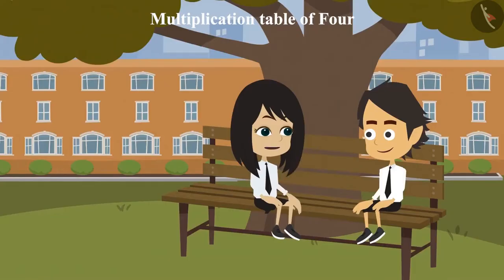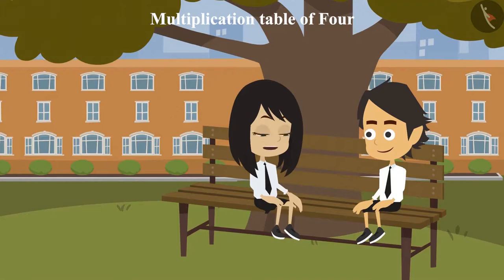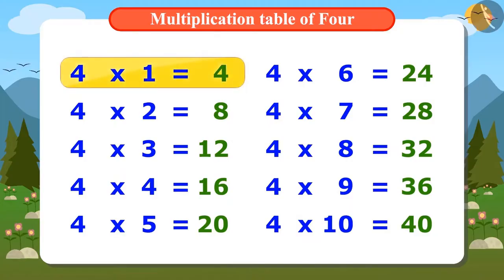Yes, now let's memorize this multiplication table of 4 in the sing-song manner. 4 ones are 4, 4 twos are 8, 4 threes are 12, 4 fours are 16, 4 fives are 20, 4 sixes are 24, 4 sevens are 28, 4 eights are 32, 4 nines are 36, 4 tens are 40.